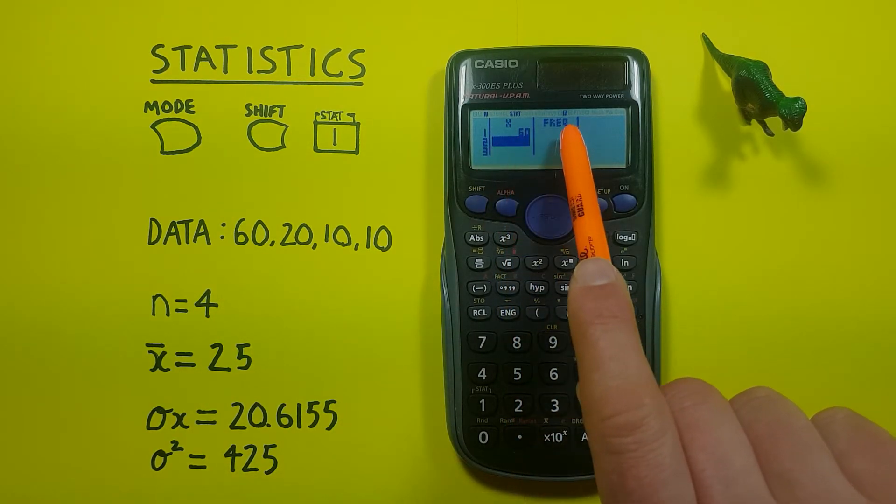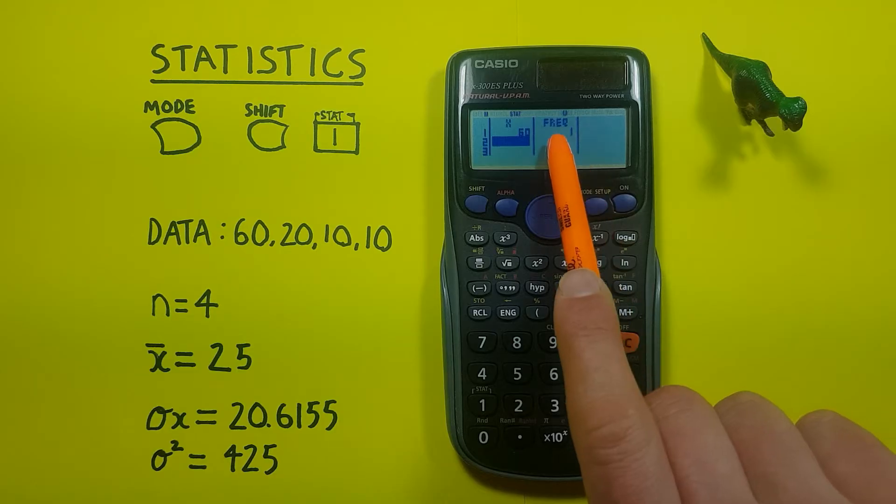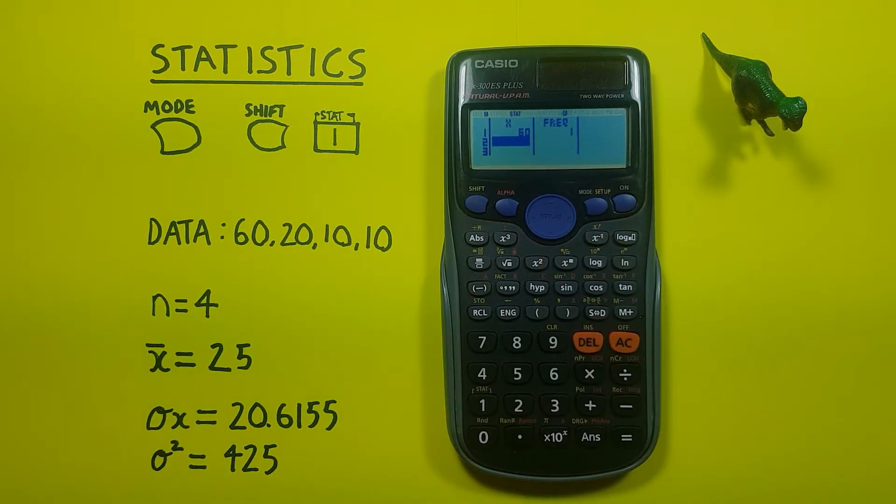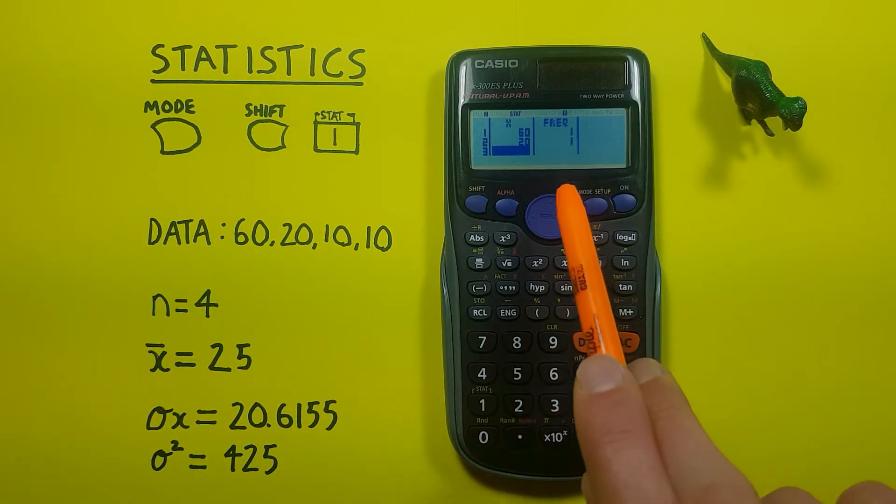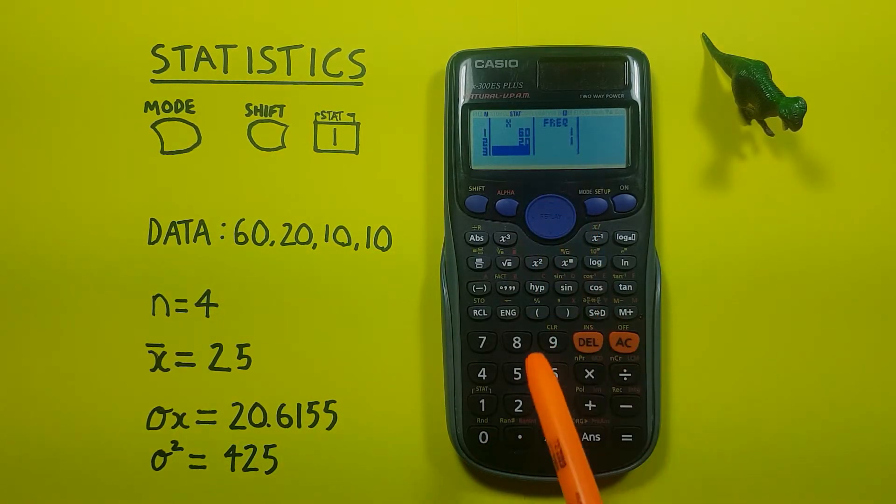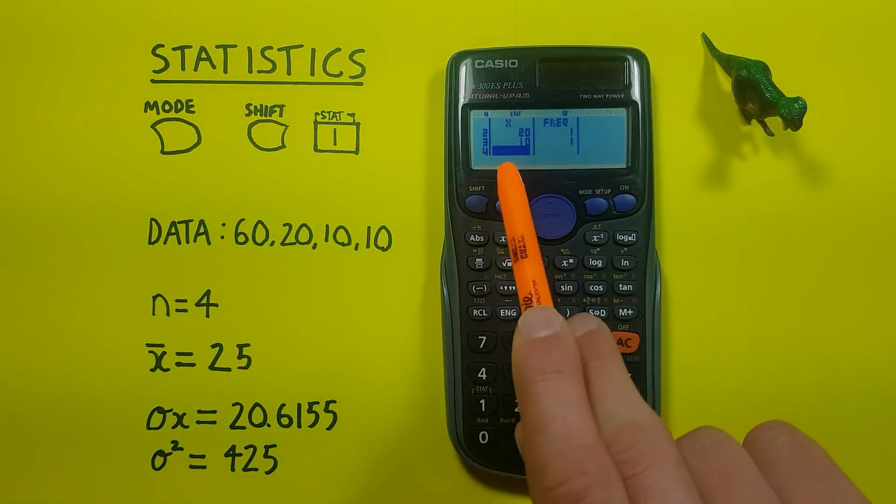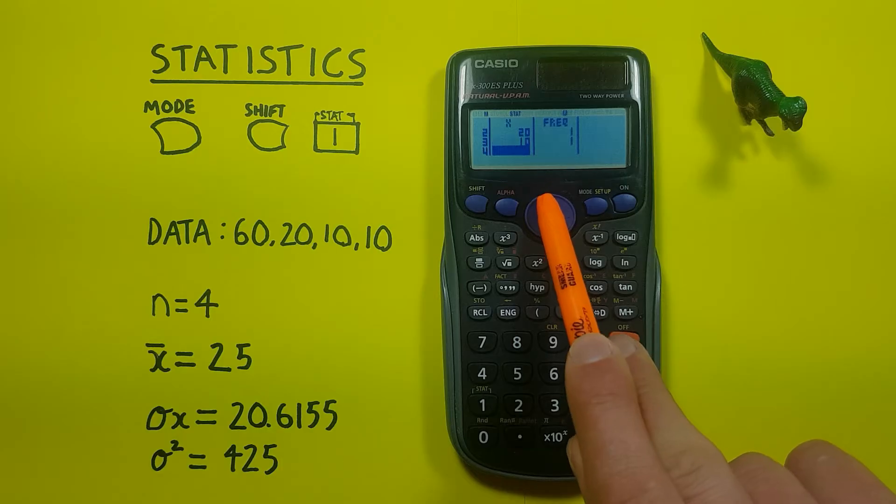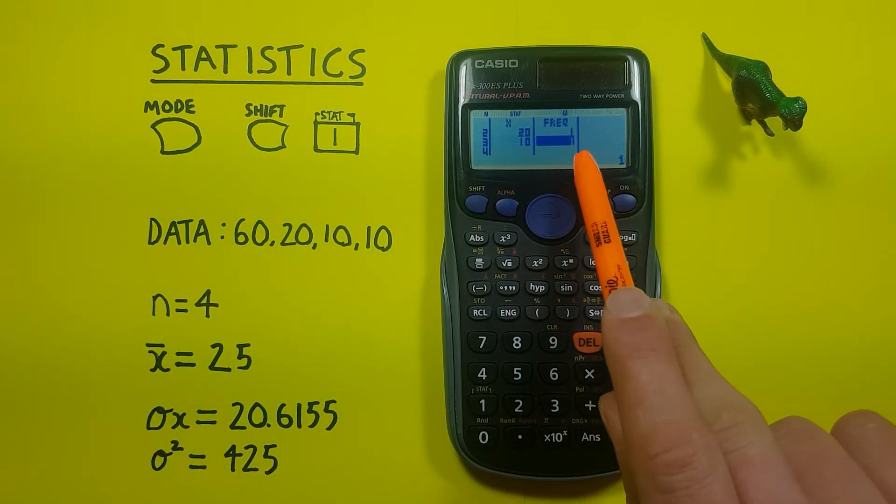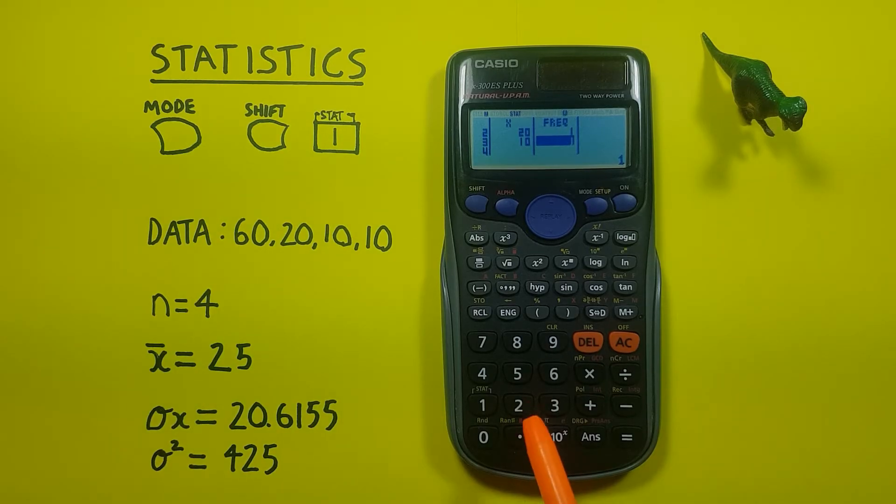And here we see 60 with a frequency of 1. 1 will be the standard if we don't change that. Next we have 20, so we enter 20, equals, there we go. Next, notice we have two tens here, so we can take advantage of that frequency column. So we enter the 10, press equals, and since 10 occurs twice, if we scroll up and over to that column there, and then press 2.